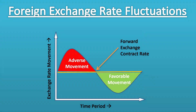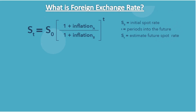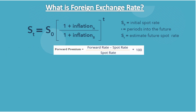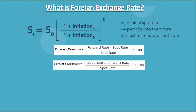Forward exchange rates are determined by the current spot rate and differences in inflation rates between the two currencies. A forward exchange rate may be higher or lower than the spot rate. When a currency is more expensive forward than spot, it is quoted forward at a premium to the spot rate. When a currency is cheaper forward than spot, it is quoted forward at a discount to the spot rate.